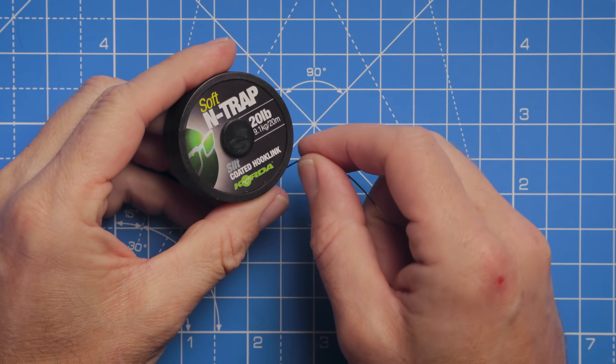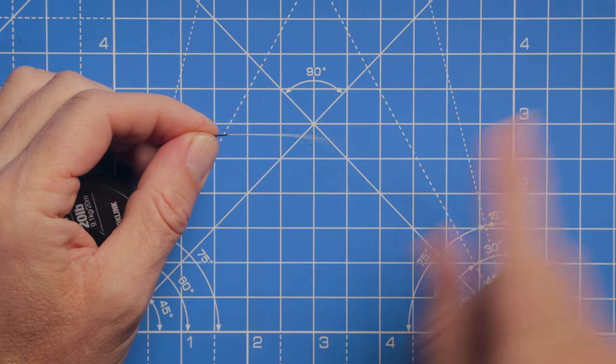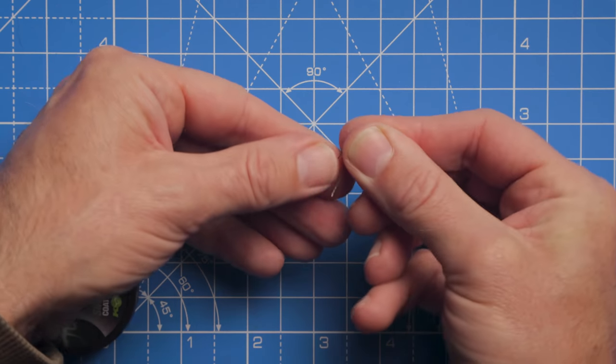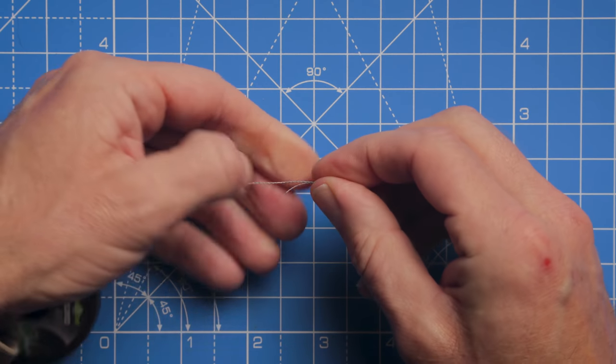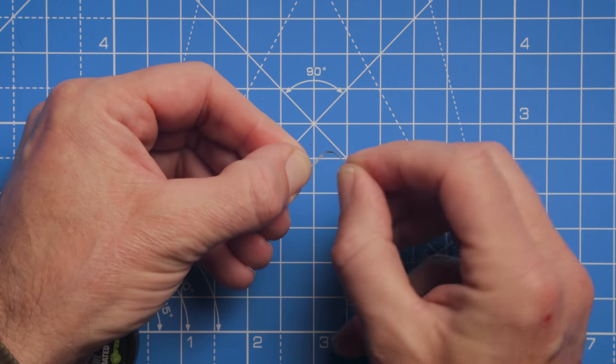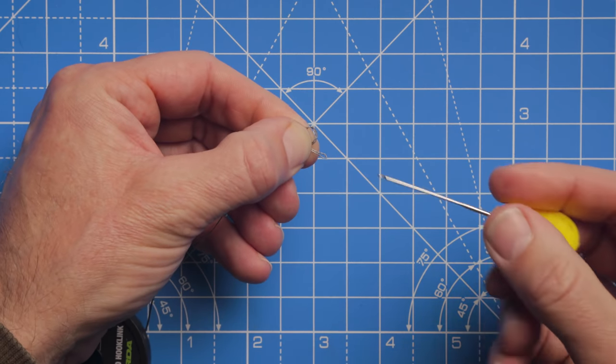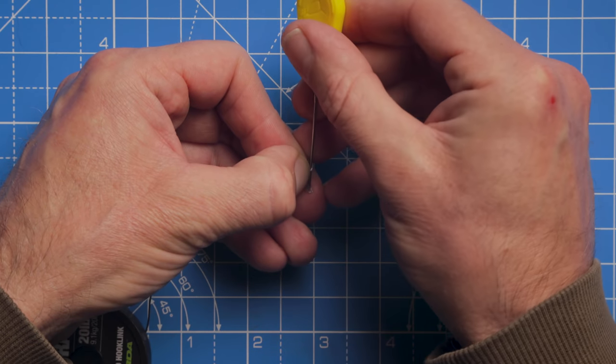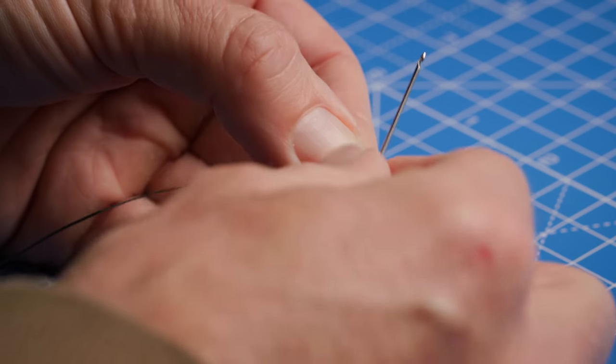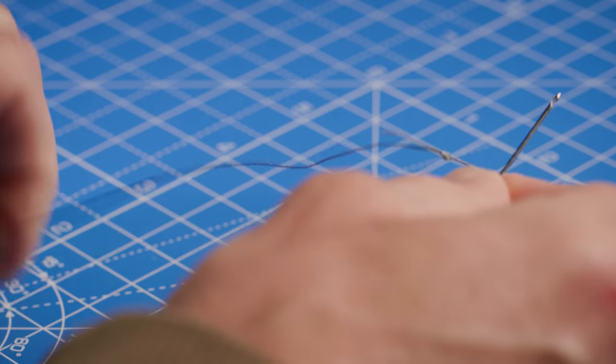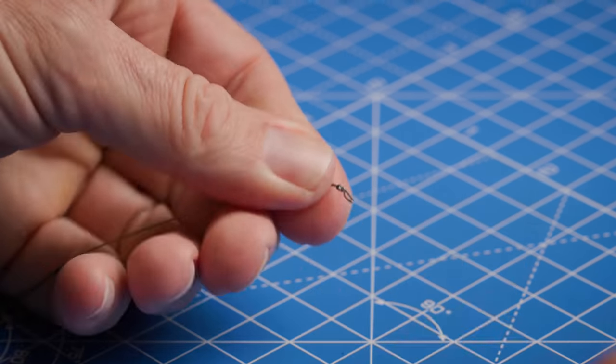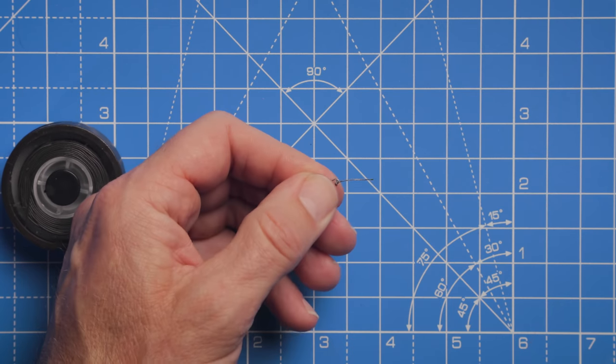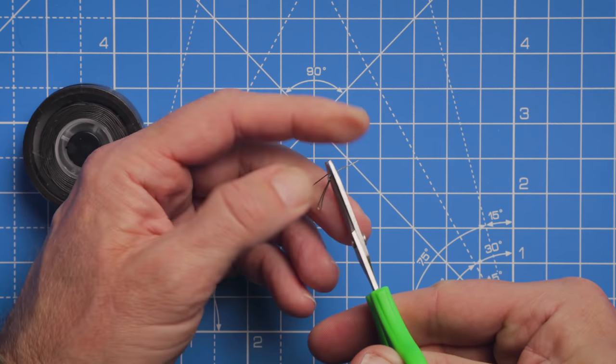First I'll take the coated braid and remove about five inches of that outer coating so we've got a soft section to make our hair. Very simple, just an overhand loop - take that over itself again. I like to use my baiting needle for these little knots, it makes it easier. Just pull that loop through - a simple overhand loop knot to form a nice hair for attaching the hook bait. Just grab the scissors and trim off that tag end.